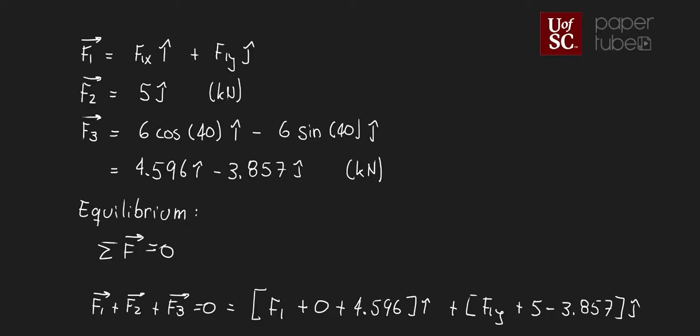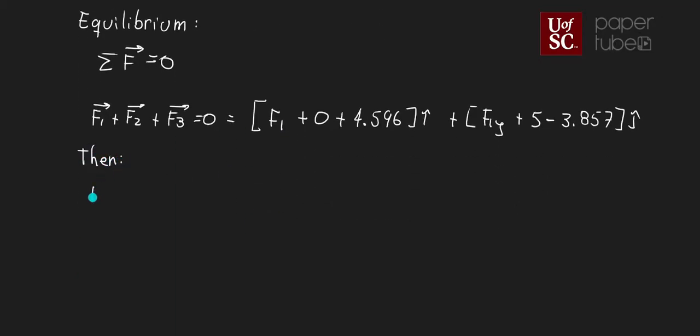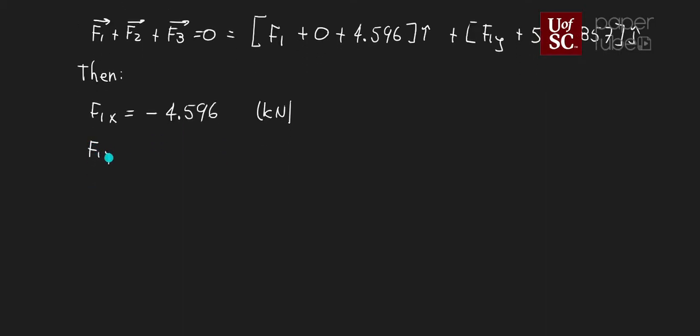So with this we can say that my F1x will be equal to minus 4.596. Why negative? Because we have this equal to zero, so I'm going to put the 4.596 in the other side of the equal sign. Kilonewtons, remember units. And my F1y is going to be equal to 5 minus 3.857, so negative, that will be minus 1.143 in kilonewtons.